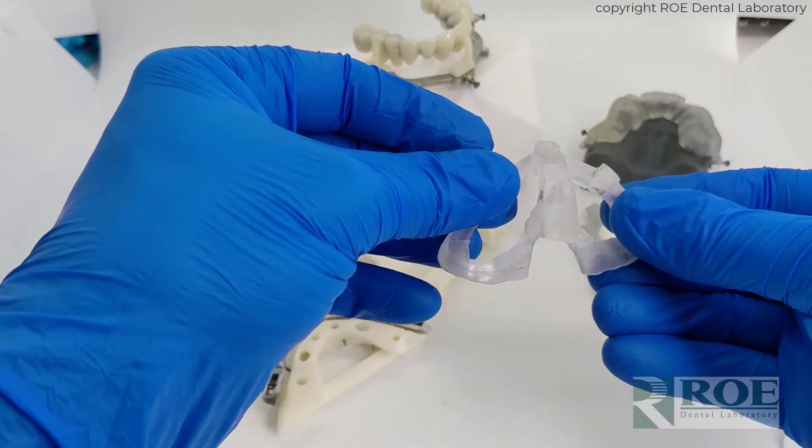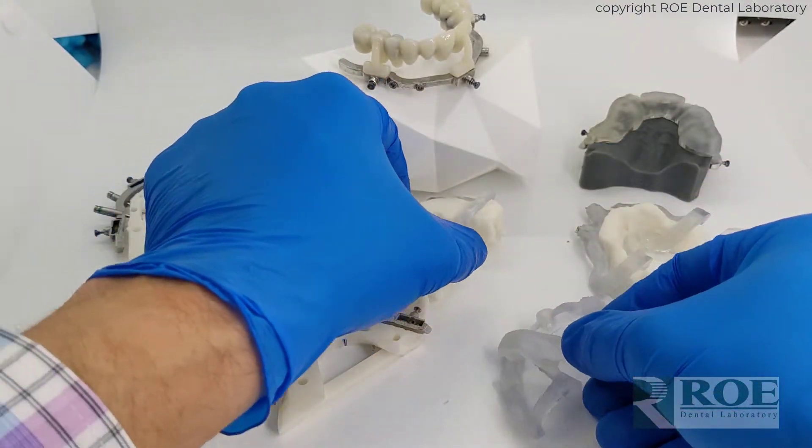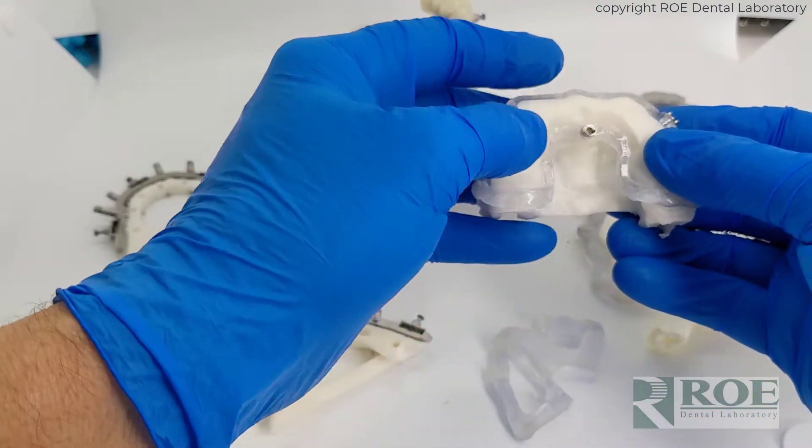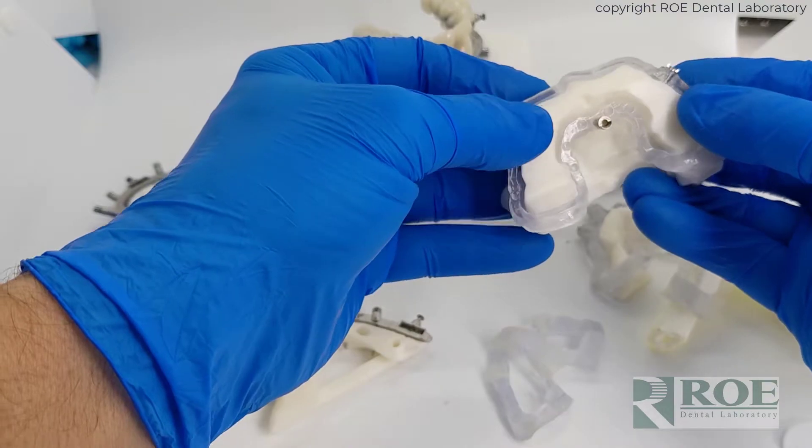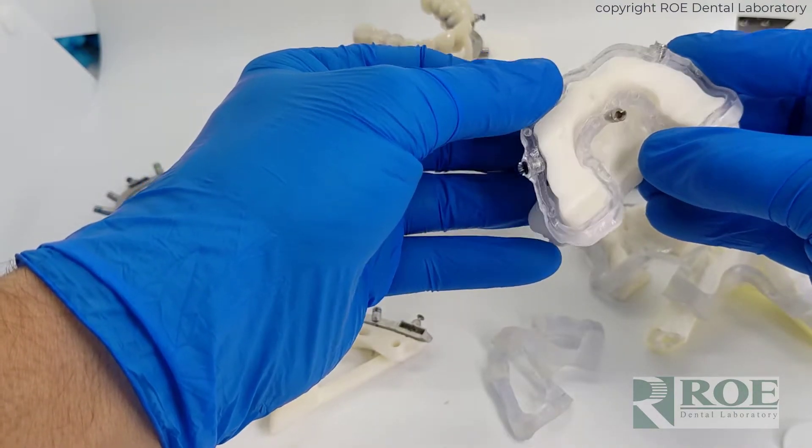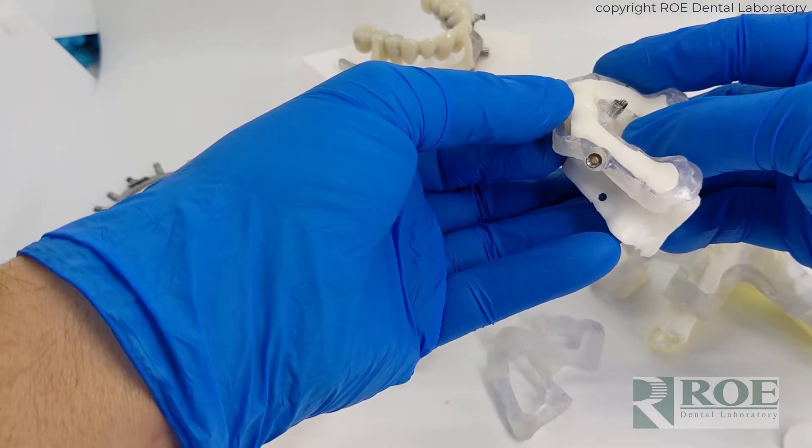You'll see that repeated on different designs. Prior to chrome, we made plastic guides and then developed the chrome cobalt system and then moved away from plastic altogether.